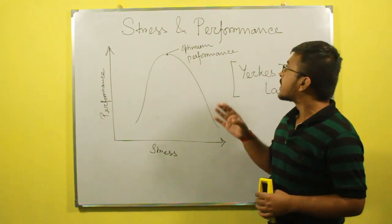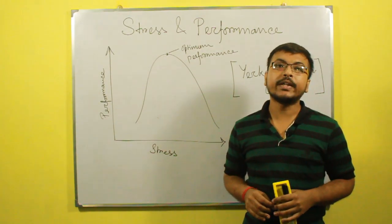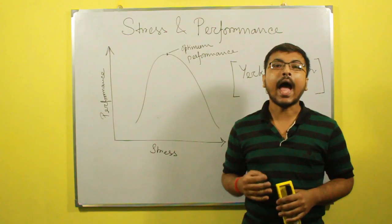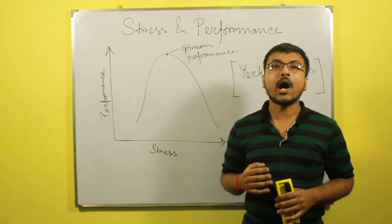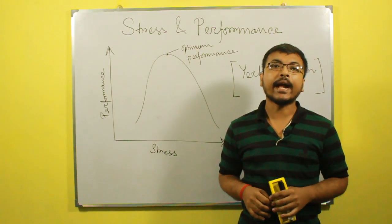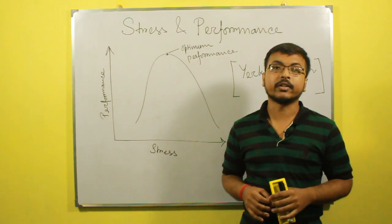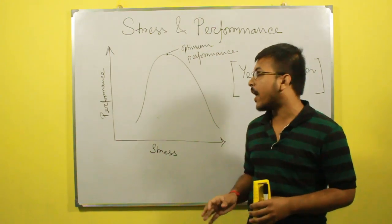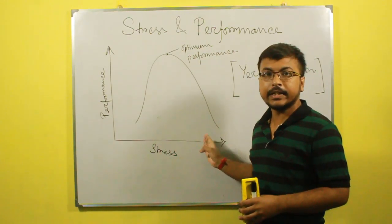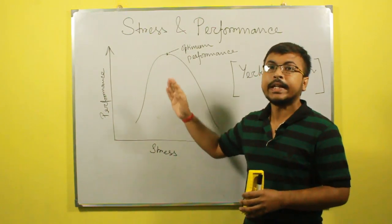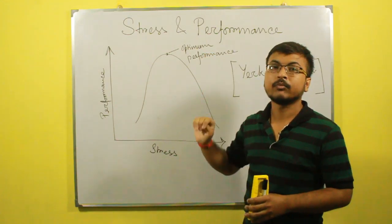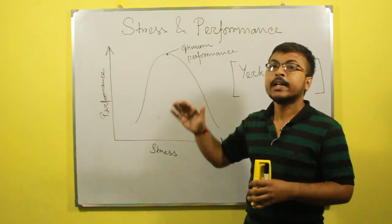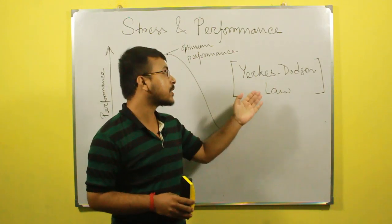Now we will discuss stress and performance. We discussed that eustress increases our performance level and distress decreases our performance level, so performance and stress are related. In the graph, when the stress level increases, performance increases to an optimum level, but when stress continues to increase, performance decreases. This relationship is known as the Yerkes-Dodson law.